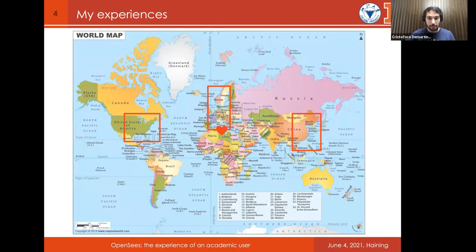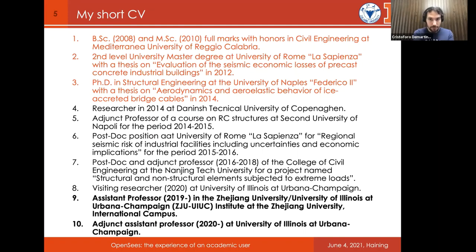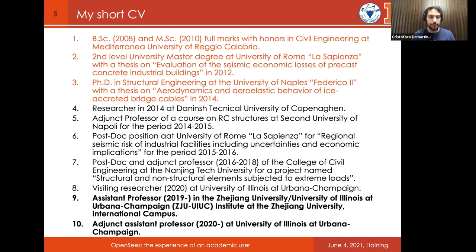My experience can be called international. I started studying in Italy, then moved to Denmark. My hometown is highlighted in the south of Italy. Then I moved to China, spending one year at UIUC. I started at a small university near my hometown in Reggio Calabria, then had a second master's degree at the University of Rome La Sapienza in seismic engineering, then my PhD at the University of Naples. I moved through several positions as researcher and adjunct professor in China, and last year I obtained the adjunct assistant professor position at the University of Illinois at Urbana-Champaign.